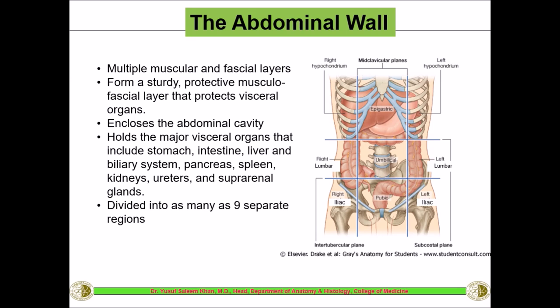The abdomen is divided into nine quadrants by two vertical and two horizontal lines. These quadrants are important because if you want to approach any particular structure, we mention which quadrant it is present in. For example, the spleen is in the left hypochondrium, the liver occupies the right hypochondrium, epigastric, and partly the left hypochondrium. The appendix is present in the right iliac fossa. This helps in identifying and tracing a particular structure in a particular quadrant.